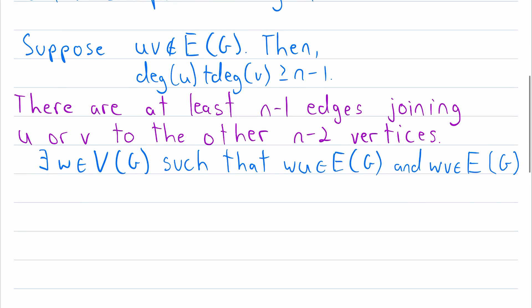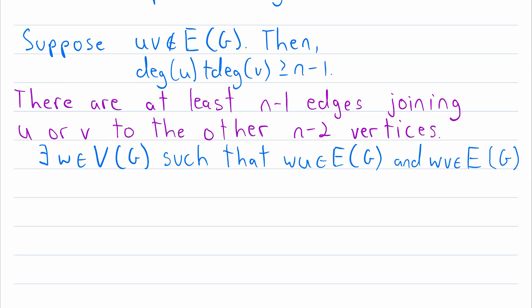Then, since we know that we have this vertex W that's adjacent to U and V, there is clearly a path from U to V. That path starts at U, then goes to W, and then to V. So the path U, W, V is a path of length 2. And that concludes the proof.